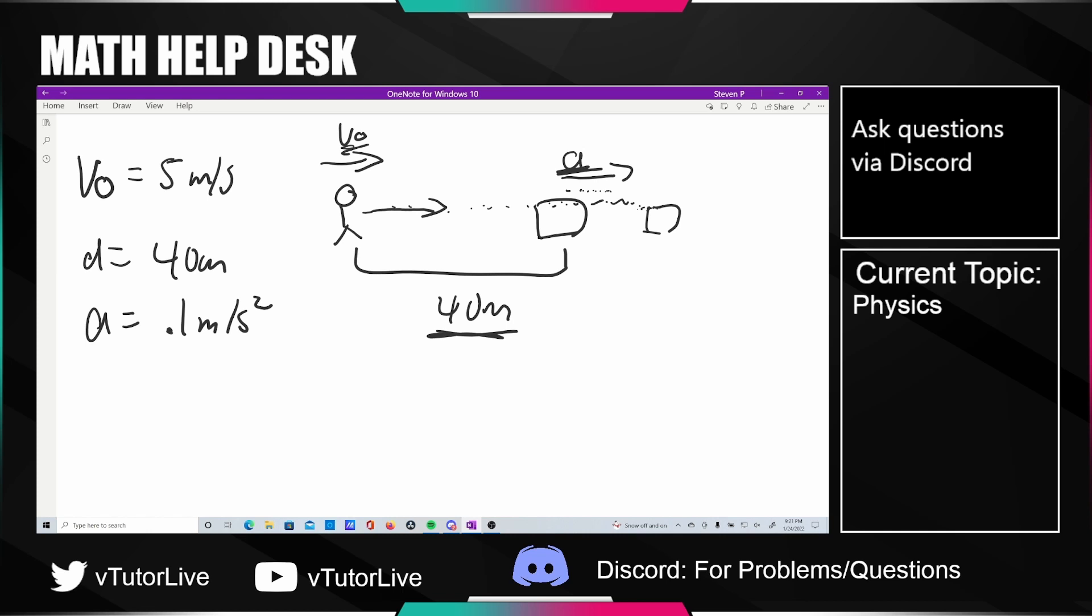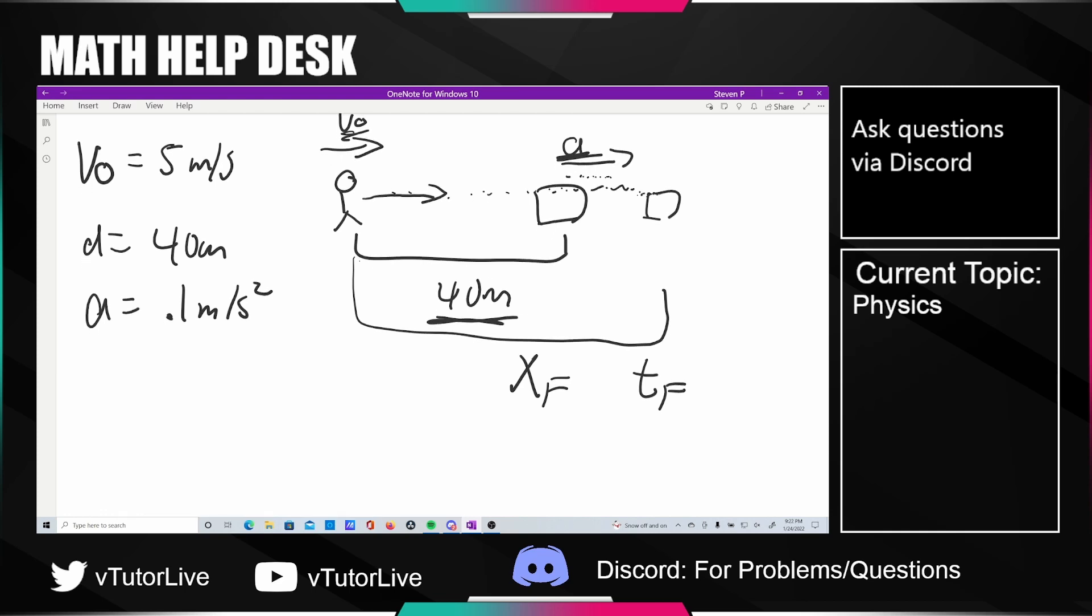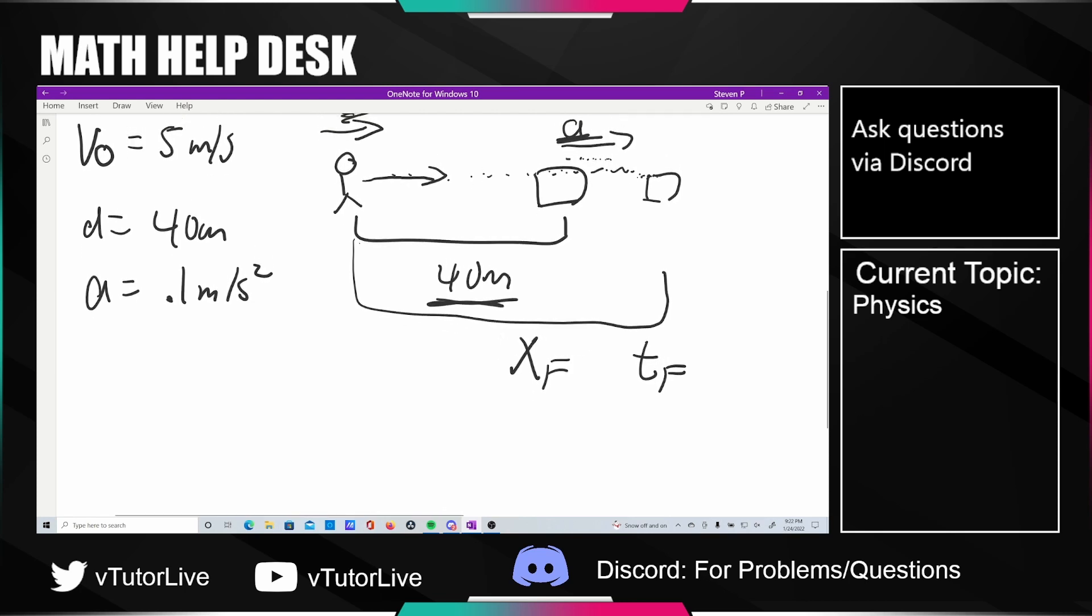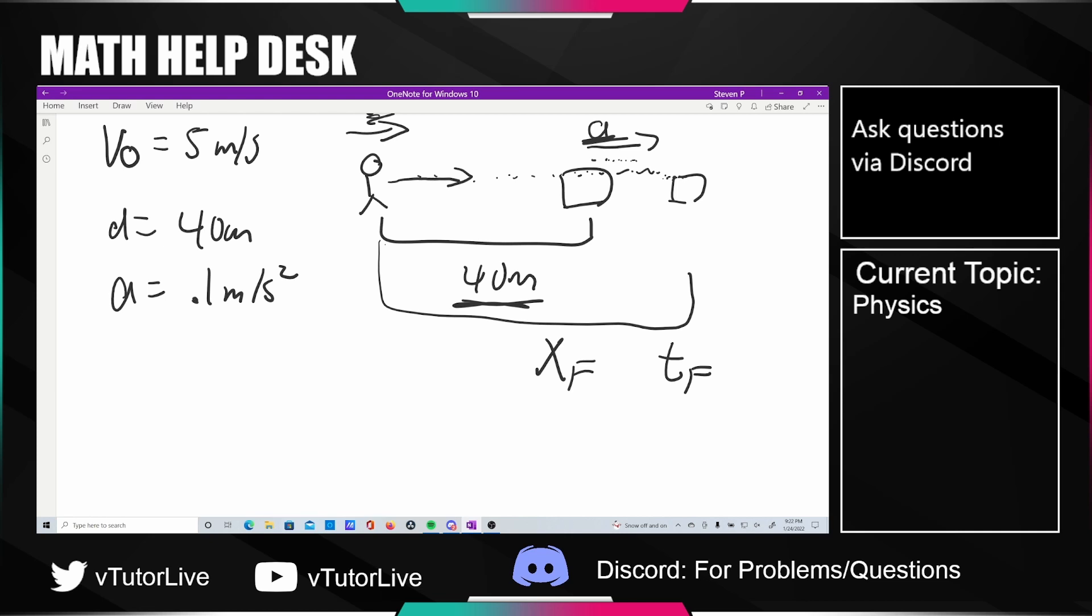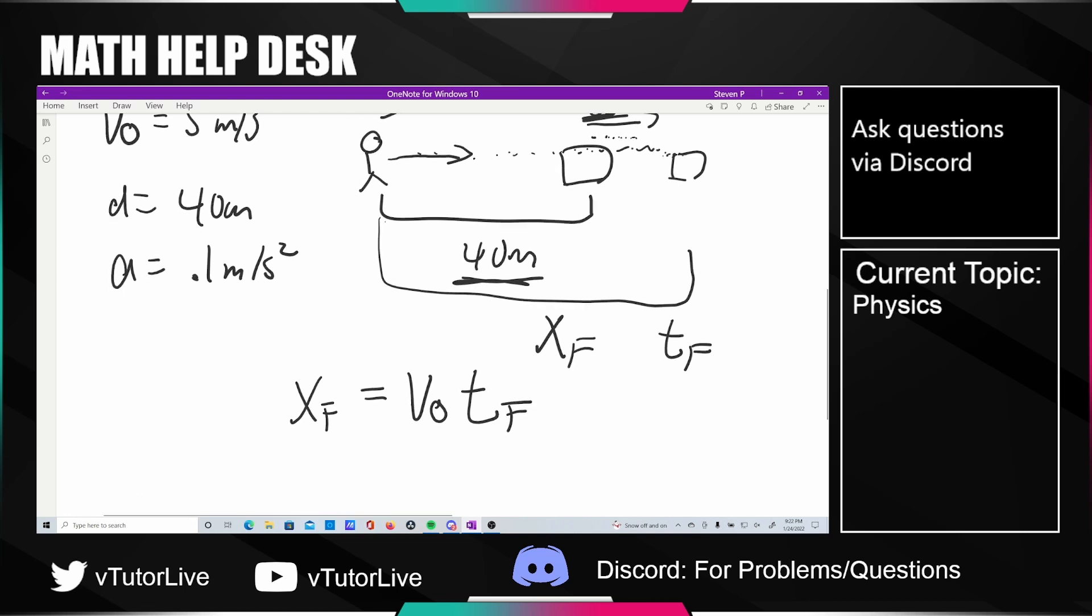What's really happening is this person is going to end up at some distance, let's call this position X_final, where they're hopefully both going to be at the end of some time period t_final where they meet up. For the student, this is just V₀ times t_f, so the student's final position should just be the total time multiplied by their constant velocity.